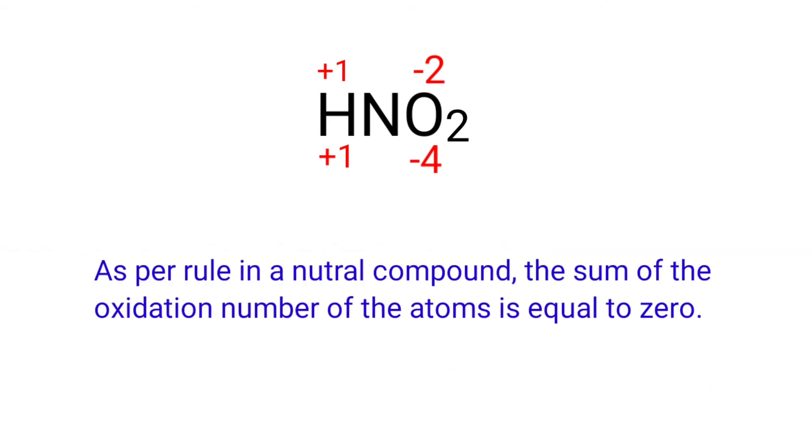As per the rule in a neutral compound, the sum of the oxidation numbers of the atoms is equal to 0. So the numbers along the bottom must add up to 0. So the number under N must be +3.